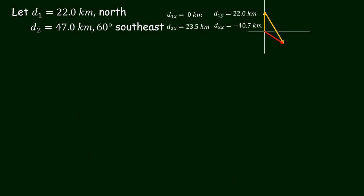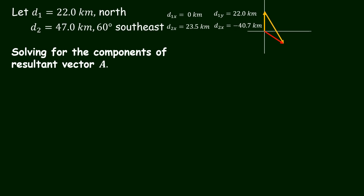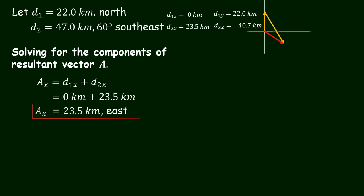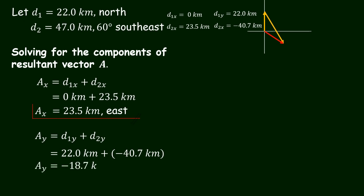Next, let's solve for the components of the resultant vector A. For the x component, the equation is A sub x equals D sub 1x plus D sub 2x. By substitution, we have 0 kilometers plus 23.5 kilometers, giving a result of 23.5 kilometers. Since it is positive, the direction is going east. For the y component, A sub y equals D sub 1y plus D sub 2y. By substitution, we have 22.0 kilometers plus negative 40.7 kilometers, giving a result of negative 18.7 kilometers. The negative sign indicates that the y component of the resultant vector is pointing south.